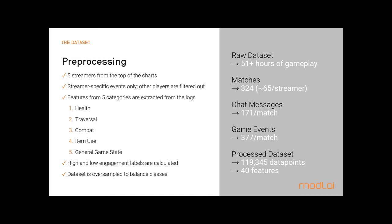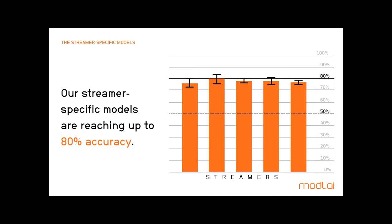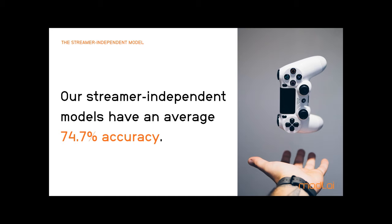Results showed that streamer-specific models are able to classify high and low momentary engagement with up to 80 to 84% accuracy on unseen matches. However, these models are very limited as they were designed to model only a specific streamer. Our next step was to pool data and train on multiple streamers while predicting the engagement of an unseen streamer's matches. Using leave-one-streamer-out cross-validation, our models reached an average accuracy of almost 75%, showing the generality of the method and the chosen metrics.